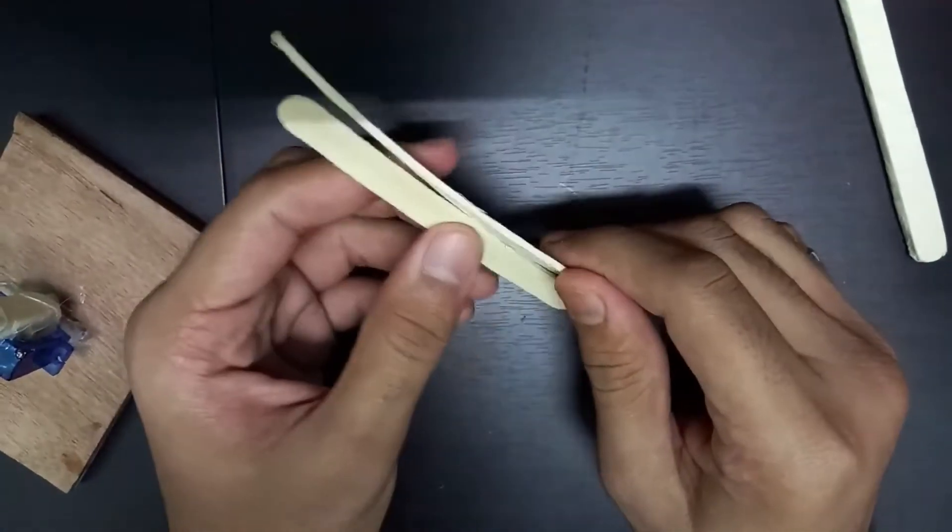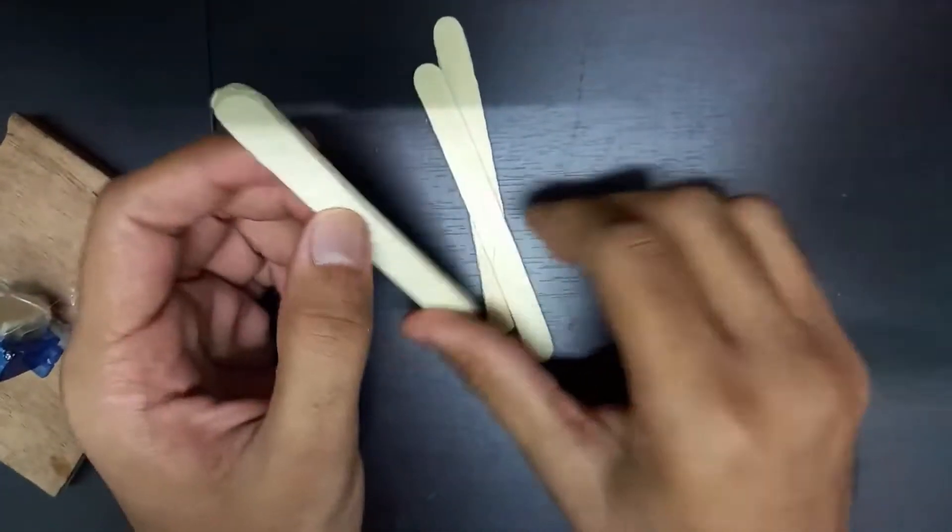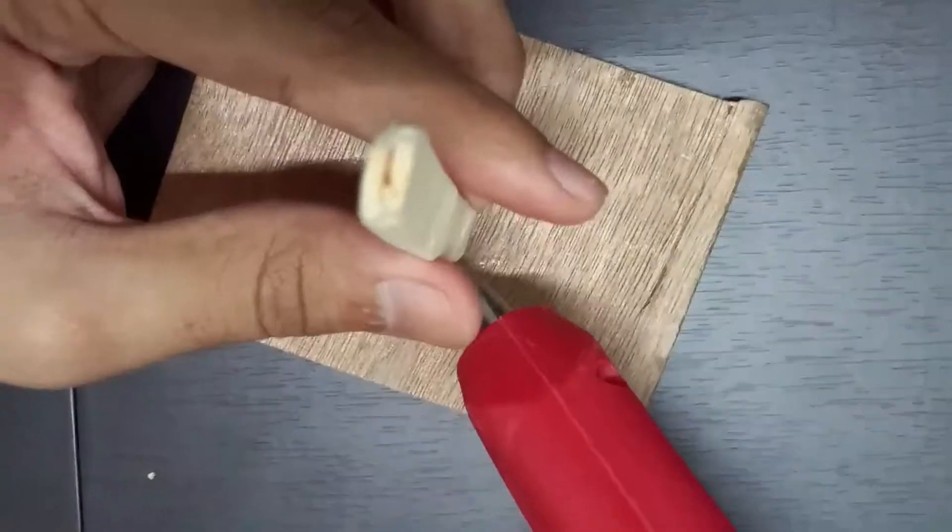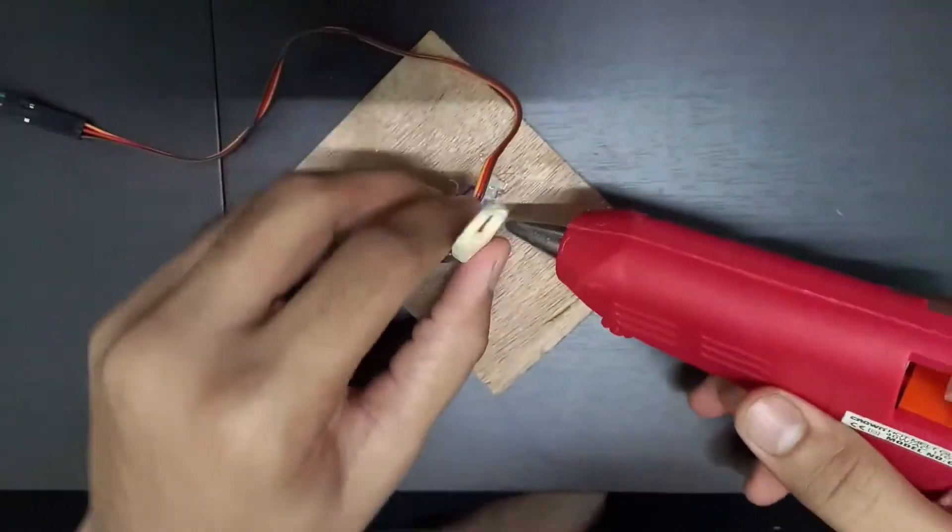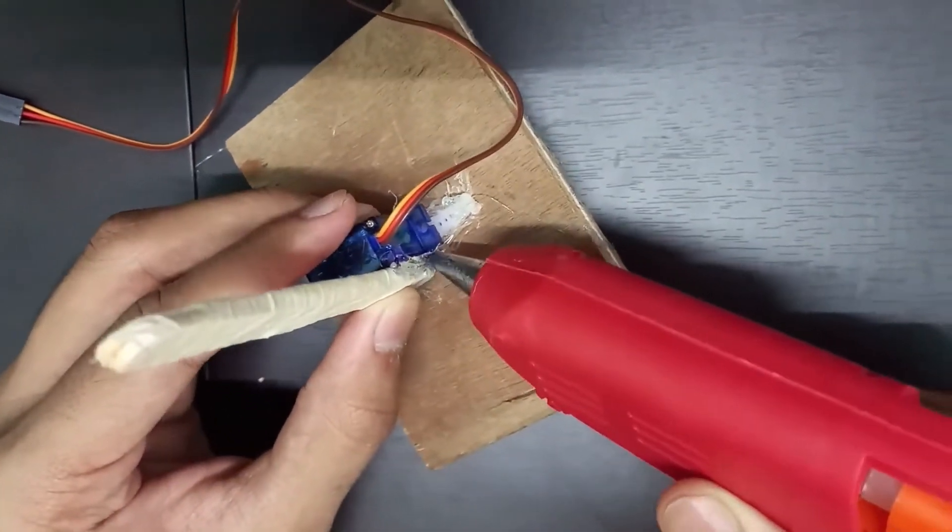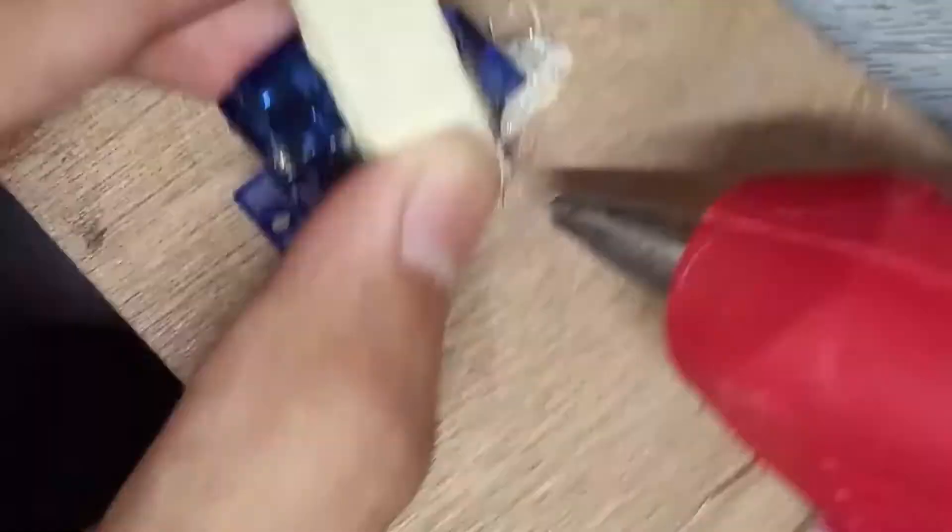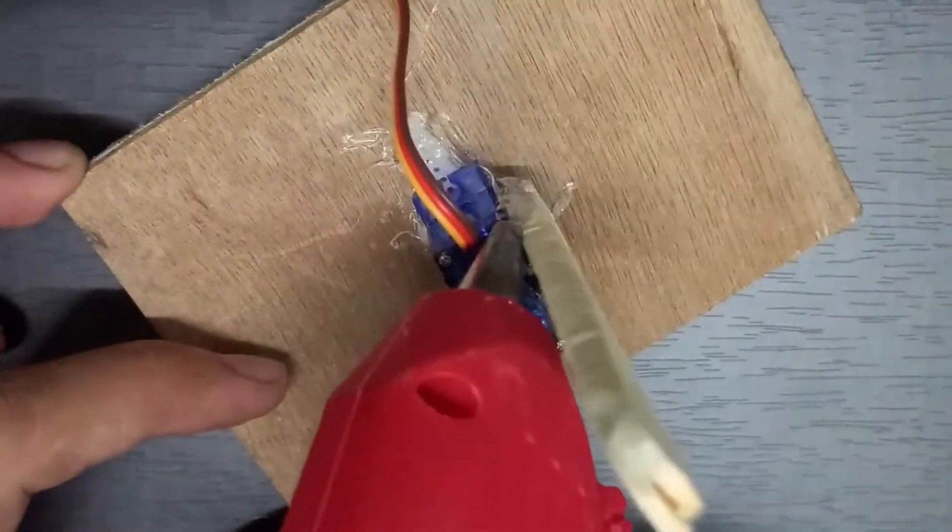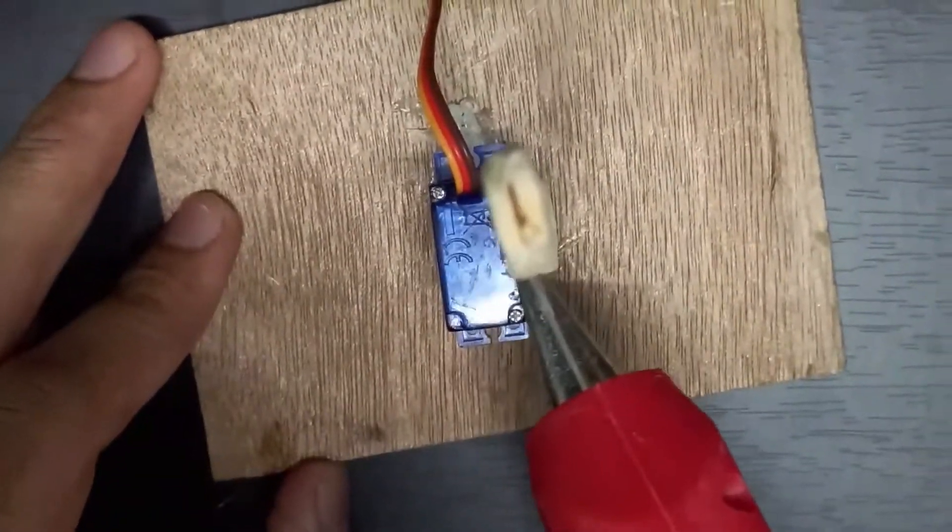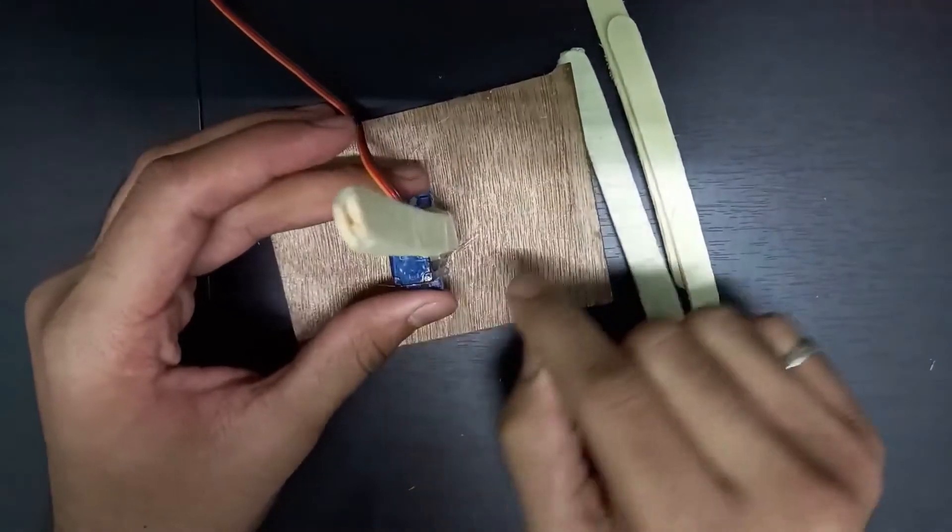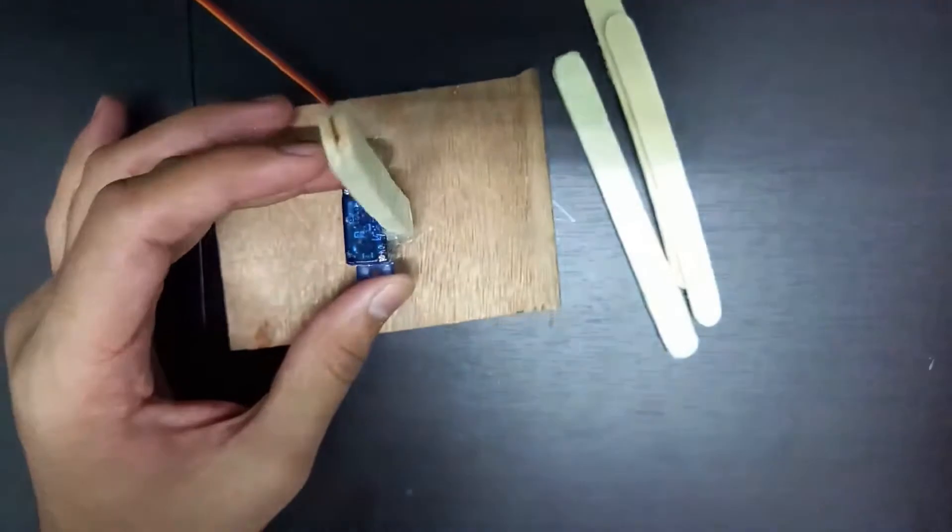Now take two ice cream sticks and wrap them with paper tape for more strength. We will stick it with the base servo motor. Glue it properly as there will be two more servo motors on the stick. As you can see, I have placed the stick with the base servo motor.